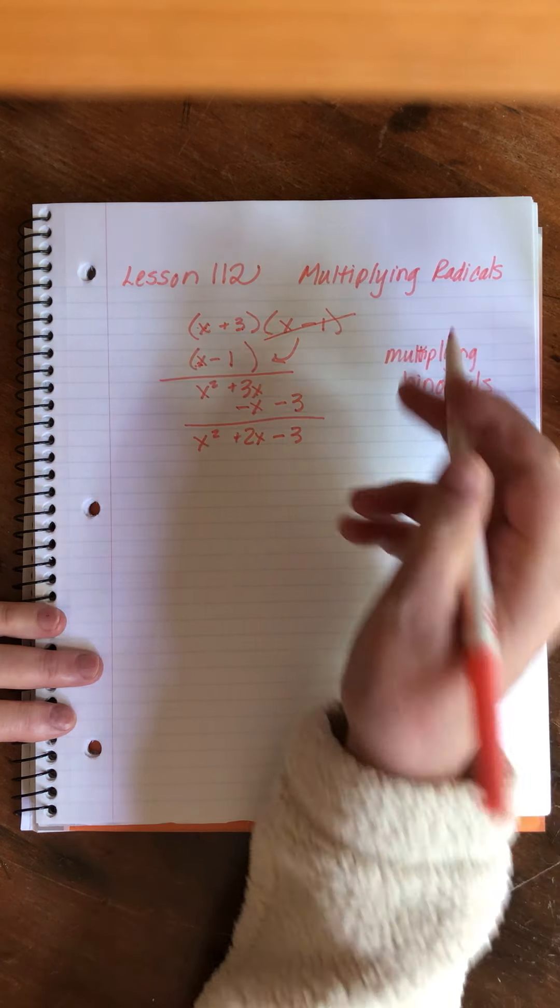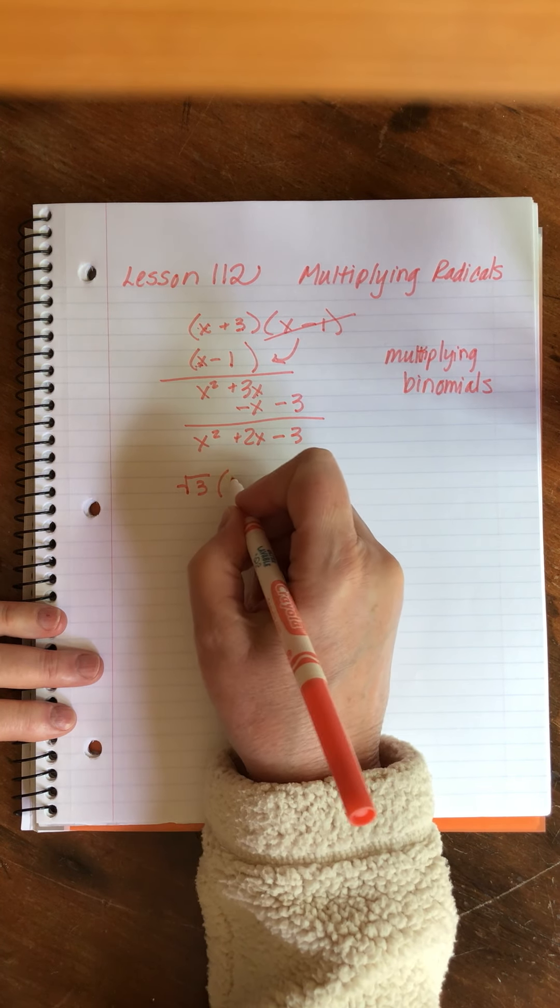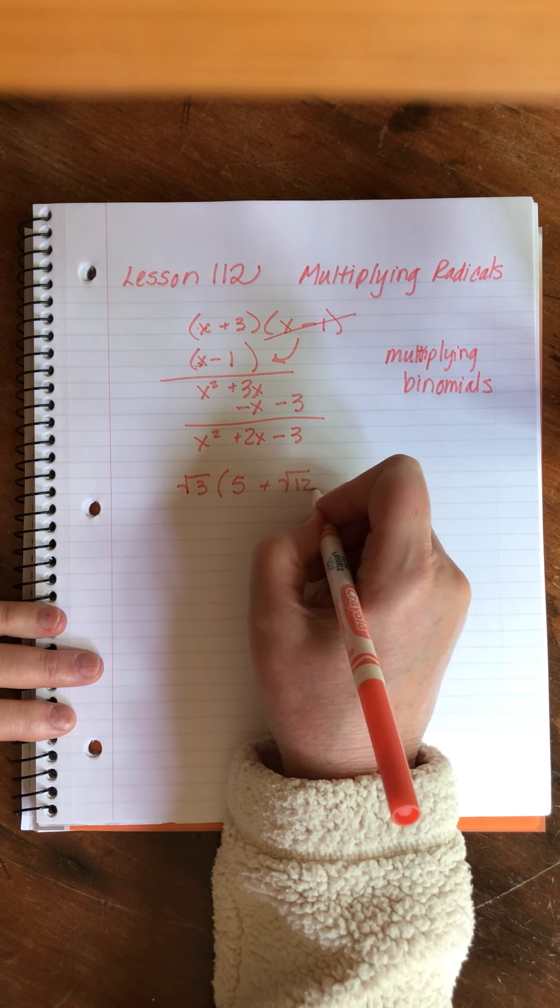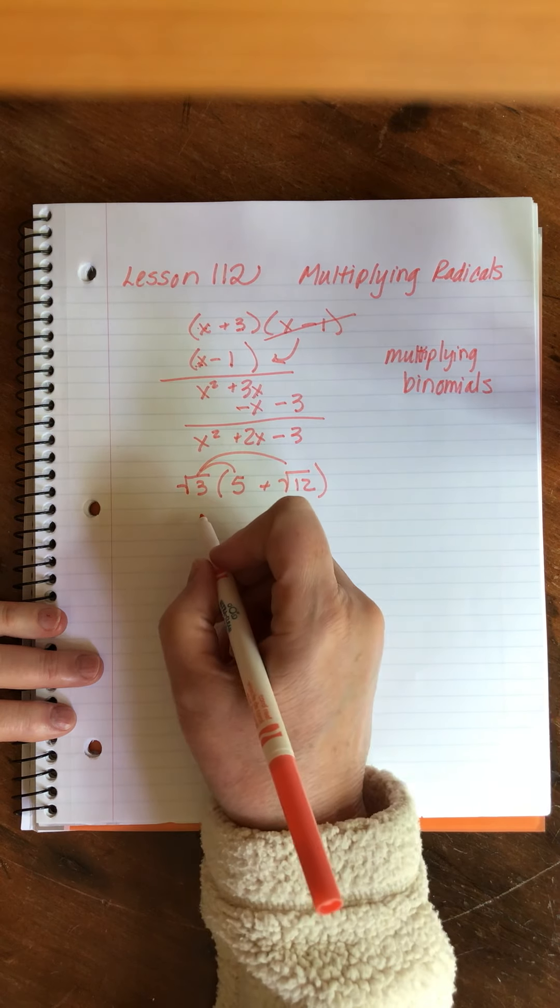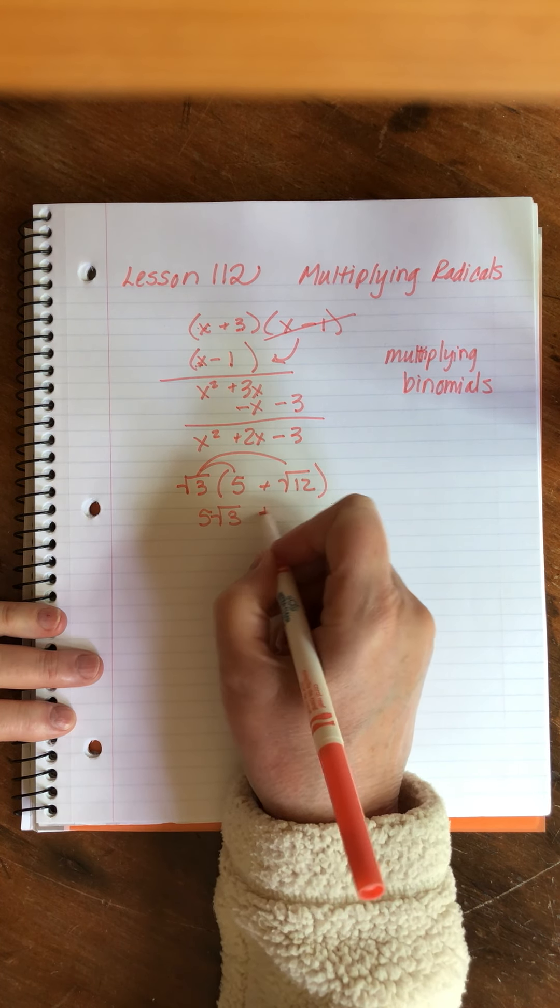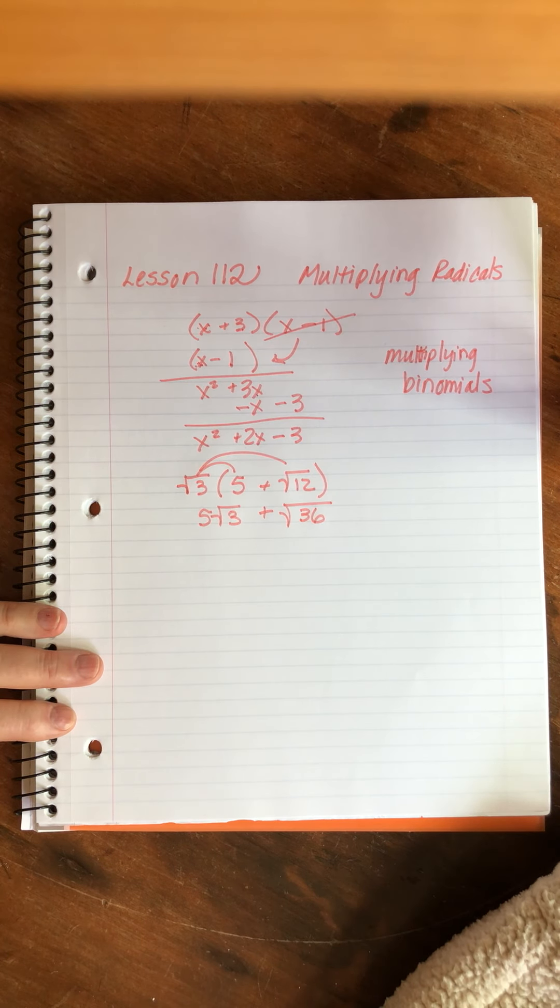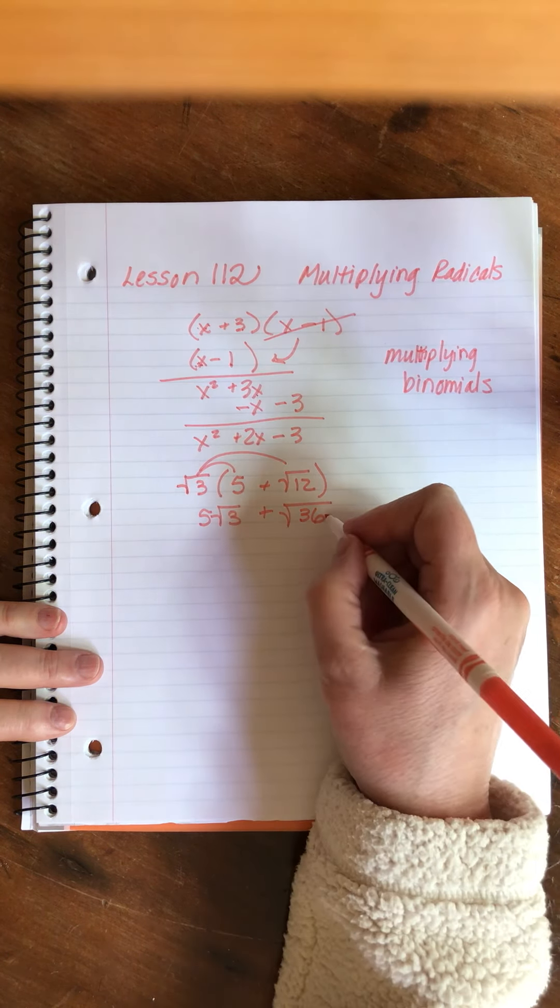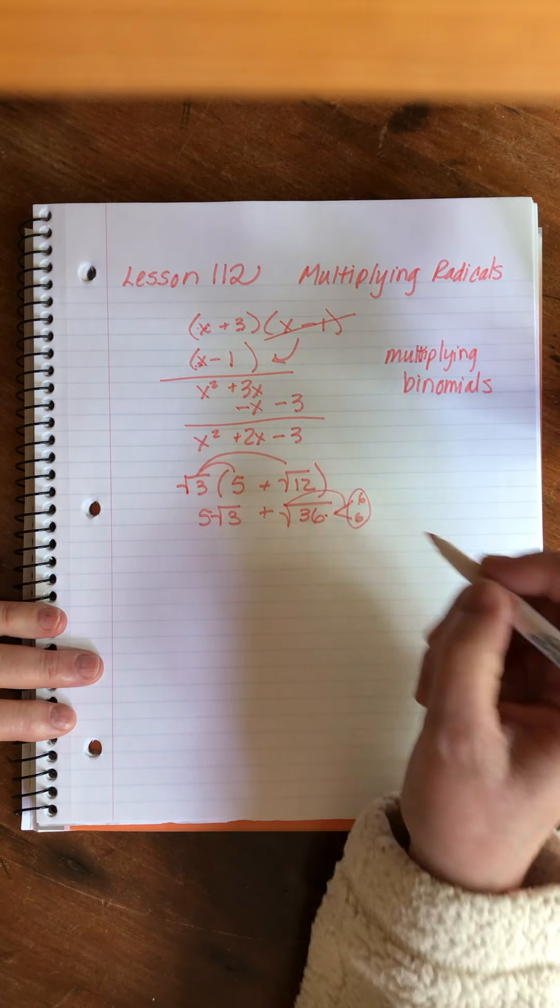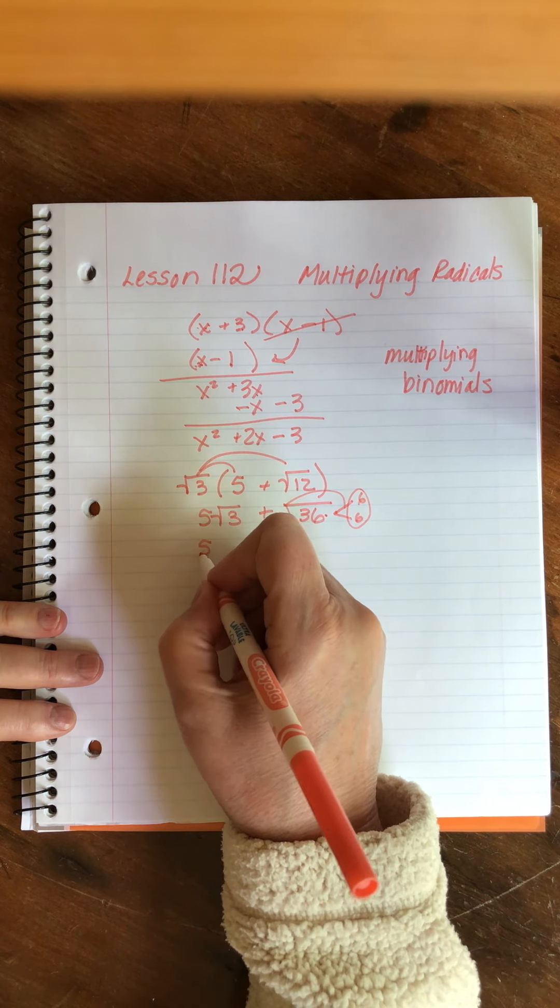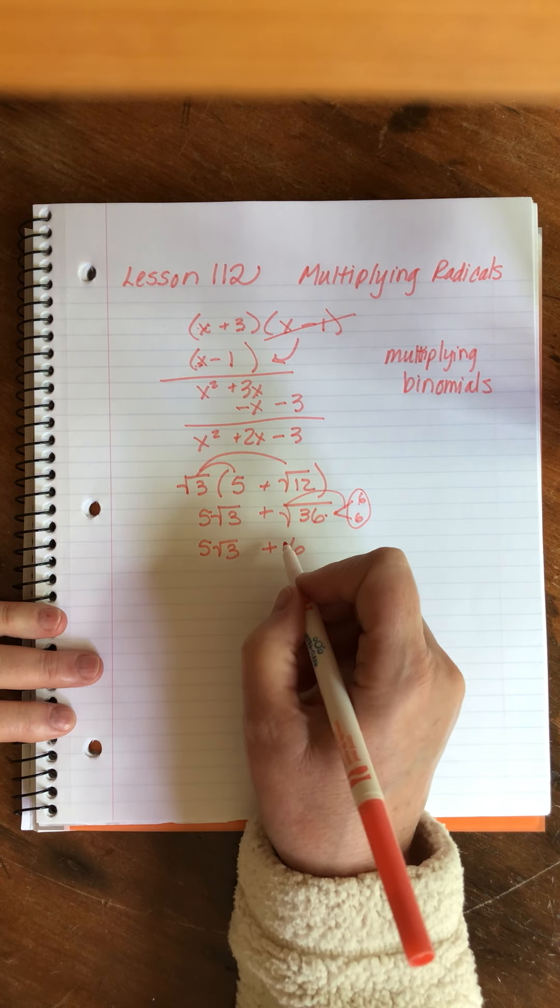We've done a little bit in multiplying radicals - stuff like this where we're just more or less distributing. We go like this and say that is 5 times the square root of 3 plus square root of 36, right? 3 times 12 is 36. But this we know is 6 times 6, so we have a pair of pigs that we can bring out, so we have 5 times the square root of 3 plus 6 as our final answer for this.